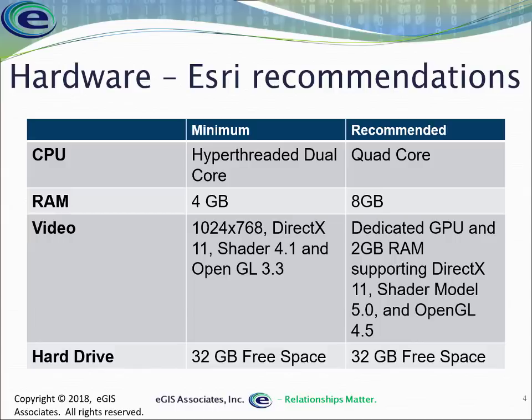ArcGIS Pro does take up a good bit of hard disk space, so Esri recommends a minimum of 32 gigabytes of free space on your hard drive. This is not just for the install but also for operation. ArcGIS Pro likes to build caches or local copies of your data so that it's faster and more efficient. Every project you open, every map or scene you view is going to end up being cached in some form, which is why you need greater hard disk space for ArcGIS Pro to run successfully. Esri's minimum recommendation is 32 gigabytes.